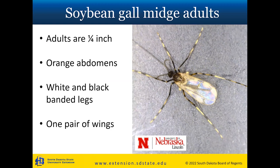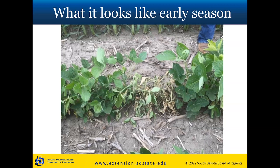There are three larval instars: the first are clear, the second are a little larger with some color, and the last instar is a bright orange to pink. The adults are harder to find during an infestation — they're about a quarter inch long with orange abdomens, typically resting with legs out showing an alternating darker and lighter banding pattern. They have one pair of wings and aren't extremely active flyers — often just hanging out on the lower leaves. Early in the season after soybeans emerge, look for wilting and dying plants.